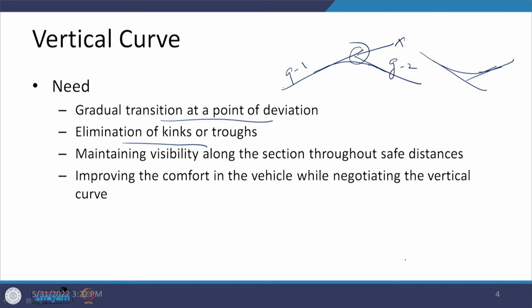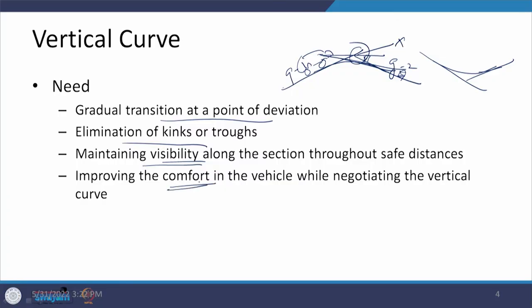Maintaining visibility along the section throughout the safe distance is another issue. If you have a kink and the vehicle is moving, visibility is based on the tangential line along the curvature. But if the kink is there, visibility is hampered — the driver has very little distance to see and react to any hazardous situation. When there is a smooth transition from one side to another, it improves the comfort level of pedestrians as well as the comfort of driving.